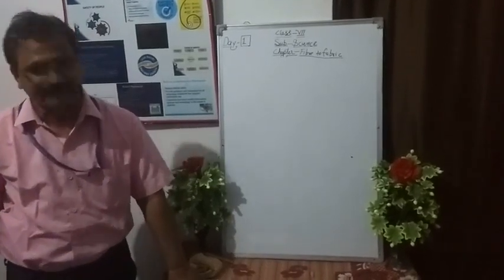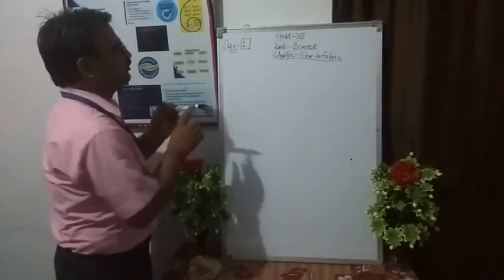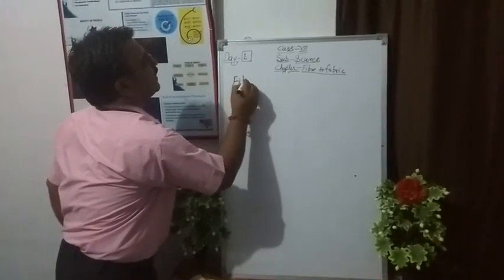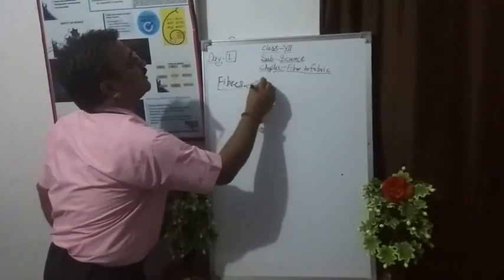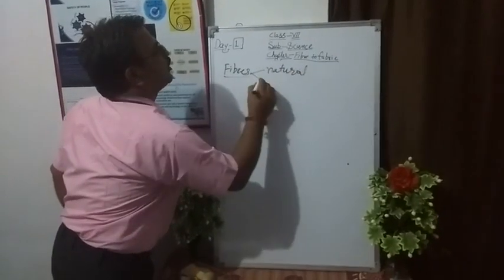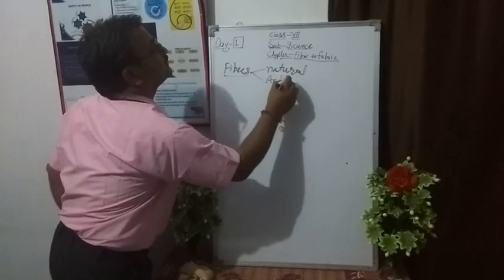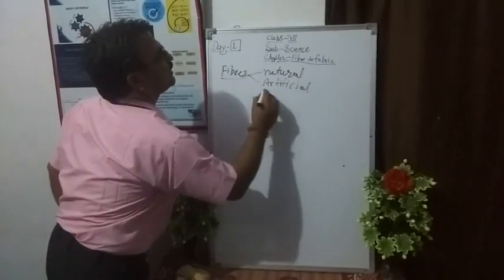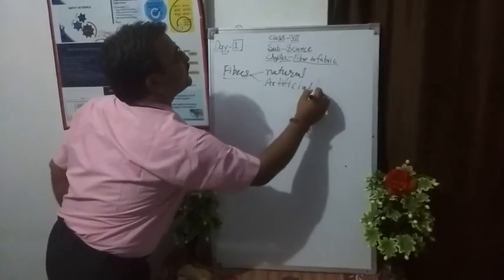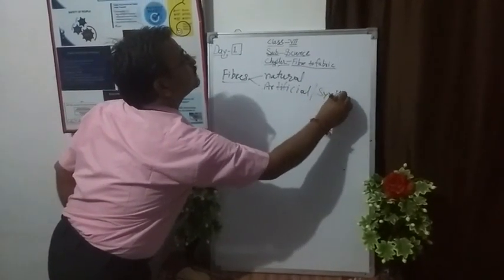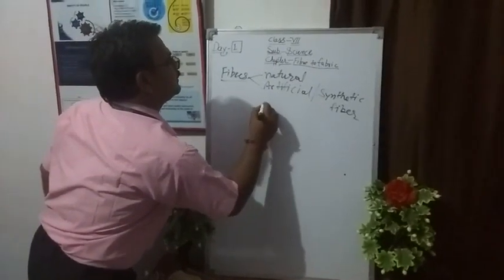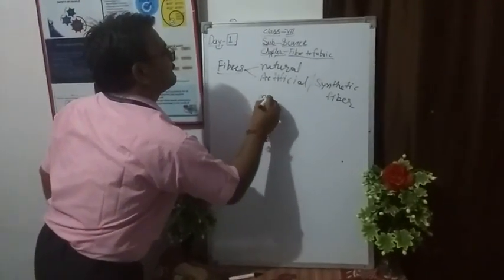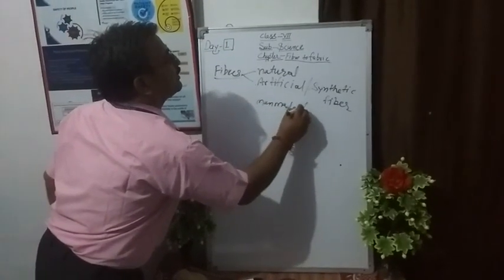There are two types of fibers. The first one is natural fiber, and the next one is artificial fiber. Artificial fiber is also known as synthetic fiber, or by its full name, man-made fiber.